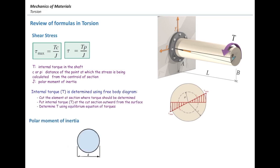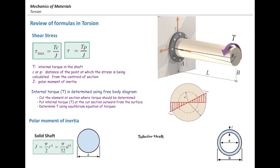For a solid circular shaft, J = (π/2)r⁴, or equivalently J = (π/32)d⁴, where r is the radius and d is the diameter. As engineers, we usually work with diameter since it is easily measured. For a hollow tubular shaft, J = (π/2)(r_external⁴ − r_internal⁴), or J = (π/32)(d_external⁴ − d_internal⁴). The polar moment of inertia of the hollow section is obtained by subtracting the polar moment of inertia of the hole from that of the full section.